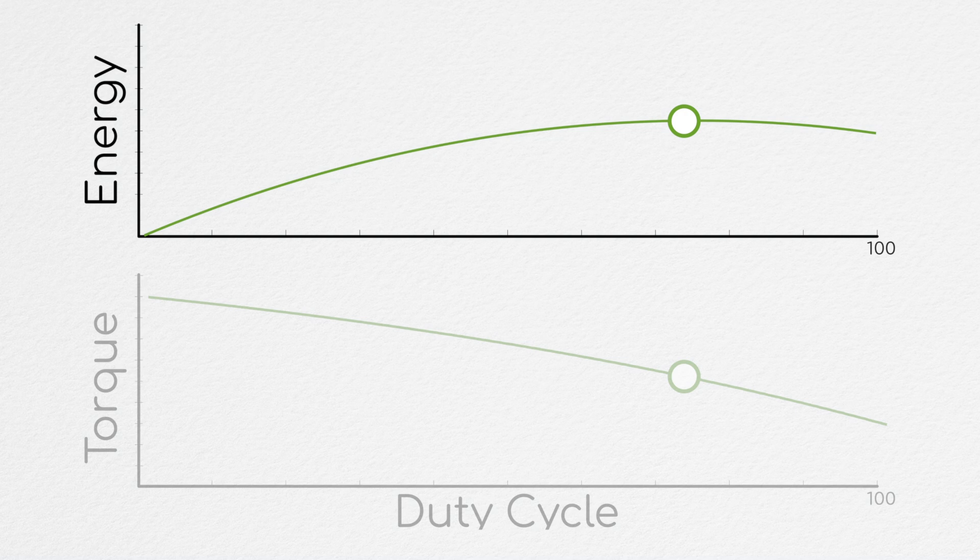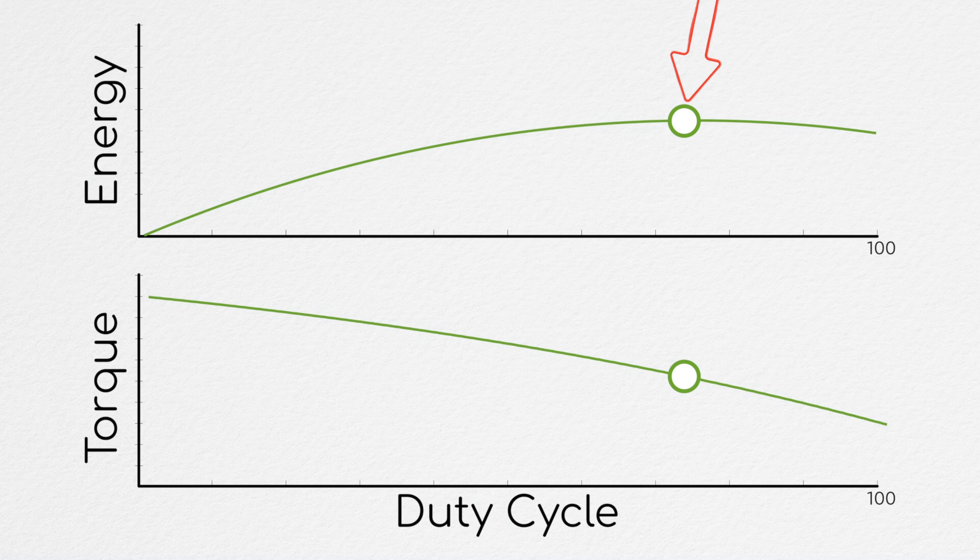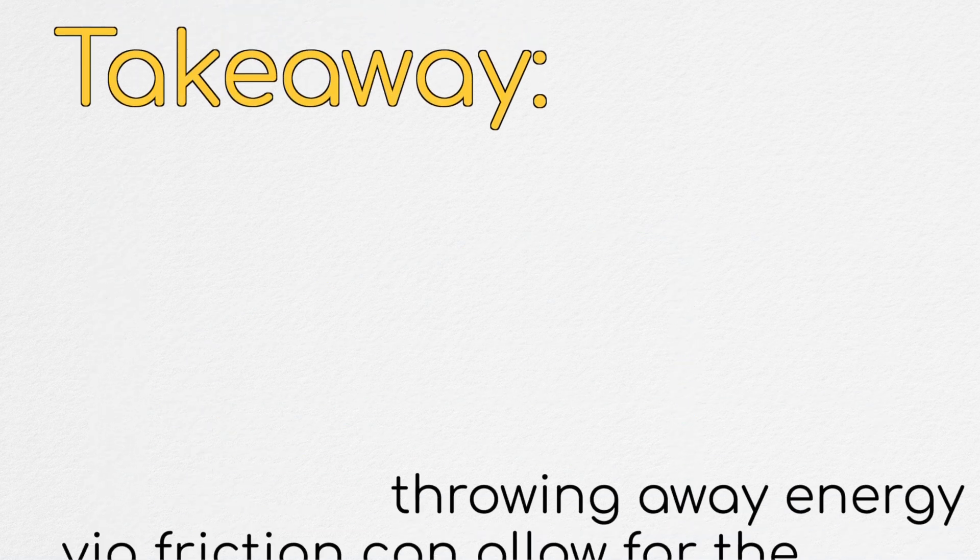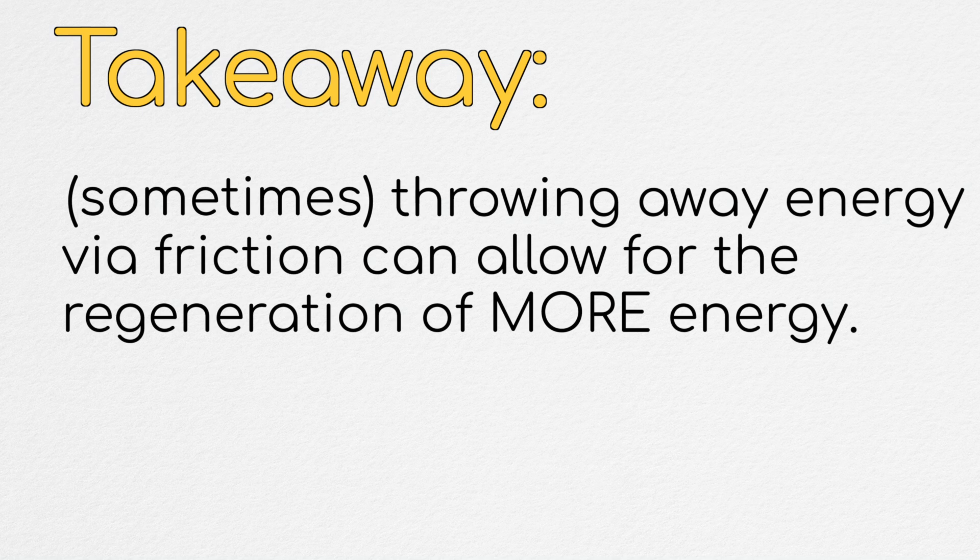So, the system uses its regenerative braking in the optimal configuration to harvest kinetic energy, and then it uses its mechanical brake to supplement the resistance provided so that you stop where you need to. The seemingly paradoxical takeaway is that, in some circumstances, essentially throwing some of your kinetic energy away via friction can actually allow you to recapture more energy than you would be able to do otherwise.